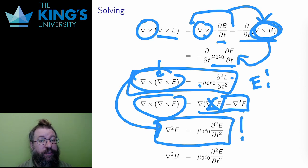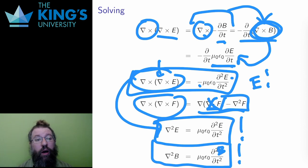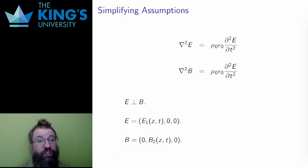In a very similar way, I could repeat all these steps, but starting with the third equation instead of the fourth, and I would get the very same situation for the magnetic field B. Alright, so now I have these two equations to solve instead of all four, and these ones don't overlap. There's only E in the first, and there's only B in the second.